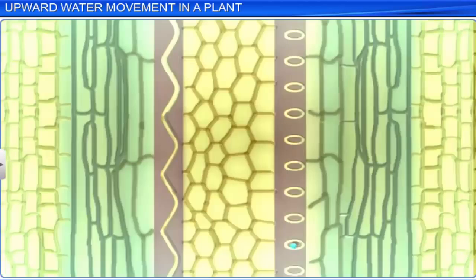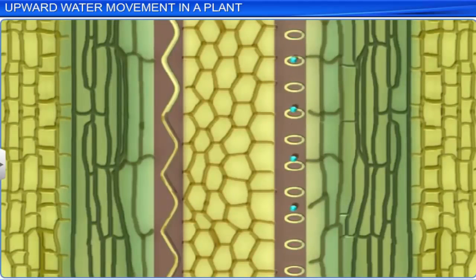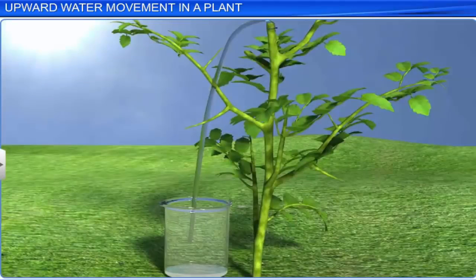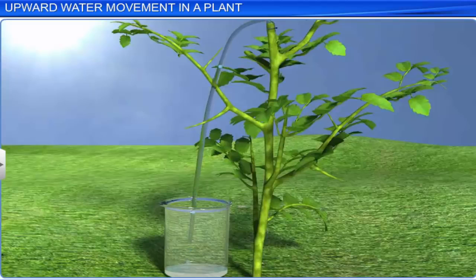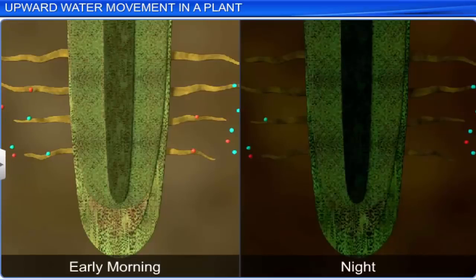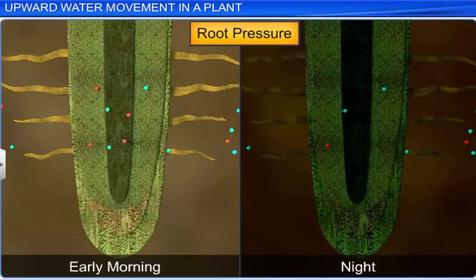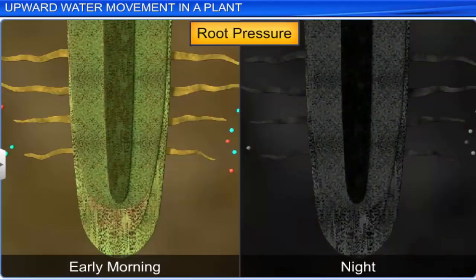This oozing is caused by positive root pressure. Now try fixing a rubber tube to this cut stem. You will be able to collect and measure the rate of exudation, and also determine the composition of exudates. The impact of root pressure is best witnessed during the night and early in the morning, when evaporation is slow.